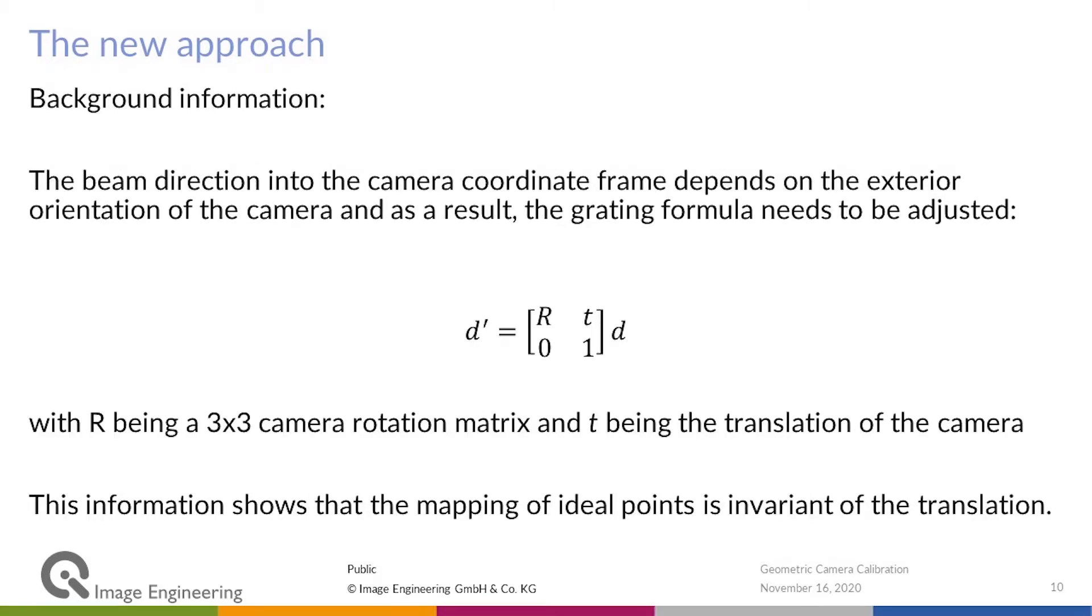The light is then incident on the camera, and we basically have a 3x3 camera rotation matrix that describes the rotation of the camera towards the diffractive optical element.